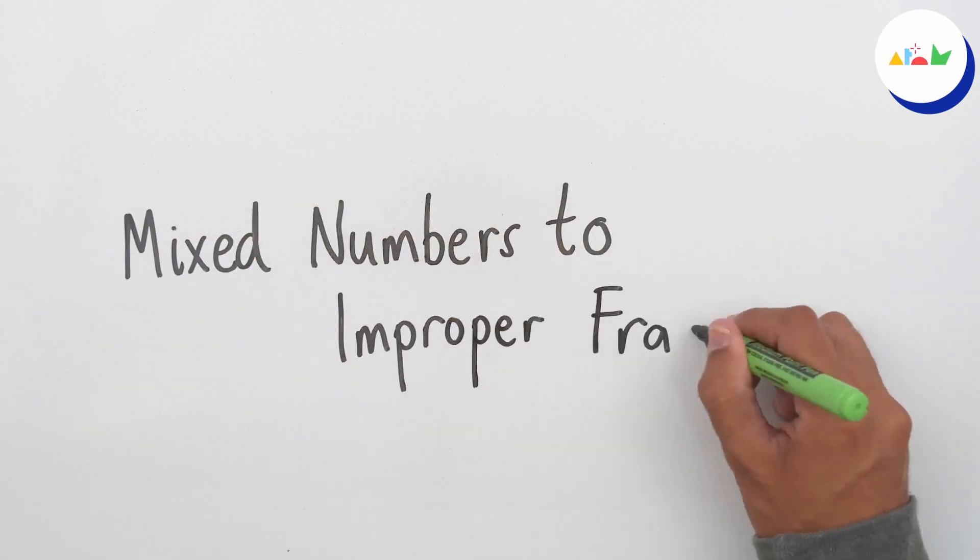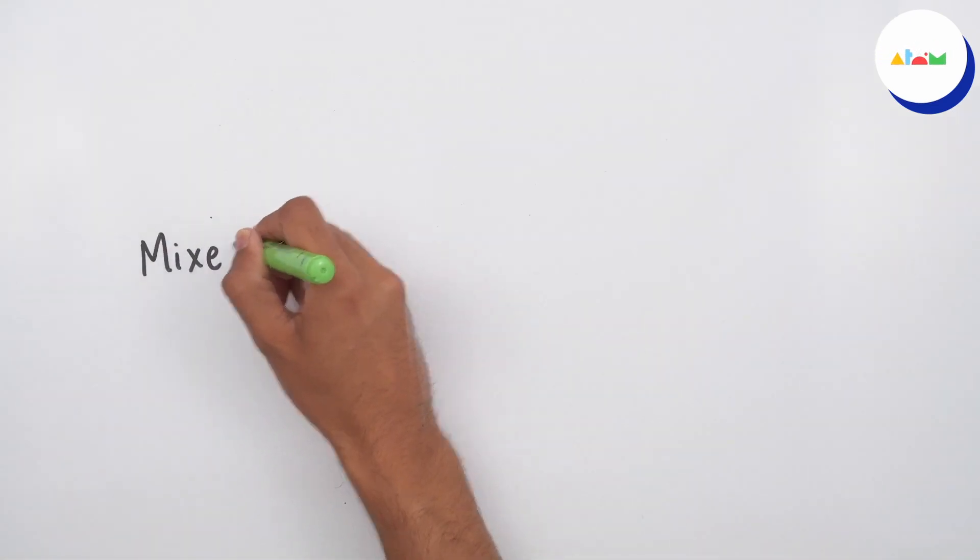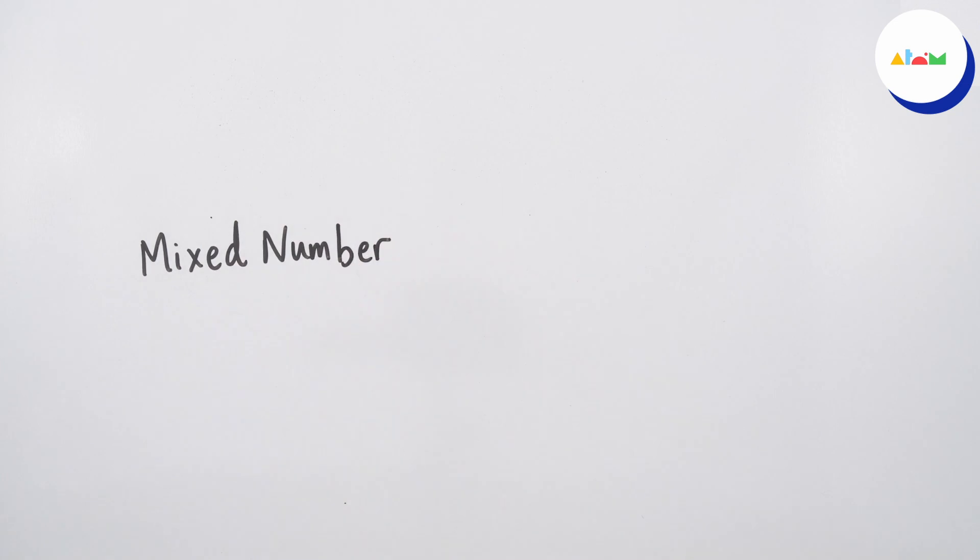Mixed numbers to improper fractions. A mixed number is a combination of an integer, indicating the number of wholes, and a proper fraction.